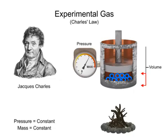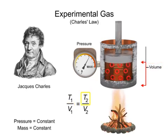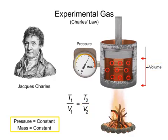Charles' Law can be expressed mathematically as the ratio of the temperature at state 1 to the volume at state 1 is equal to the ratio of the temperature at state 2 to the volume at state 2. This law is true as long as the pressure and mass remain constant.